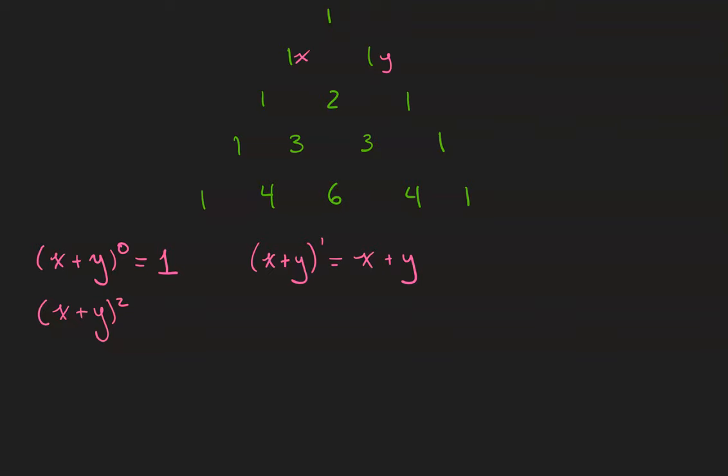x plus y squared, you probably know, is x squared plus 2xy plus y squared. The coefficient on x squared is 1, the coefficient on xy is 2, and the coefficient on y squared is 1.